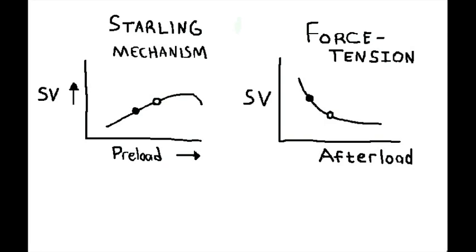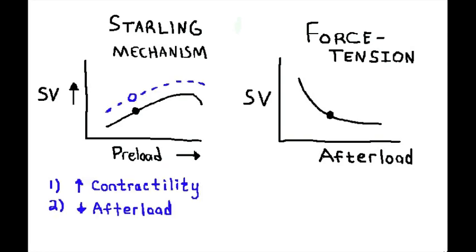Besides preload and afterload, what else can affect stroke volume? There are only three things — so what's the third? Contractility. Looking at the Frank-Starling curve, we can shift the entire curve upward with inotropy, otherwise known as contractility, and you should know this is through beta-1 stimulation. In contrast, beta-blockers will shift this curve downward due to decreased inotropy.